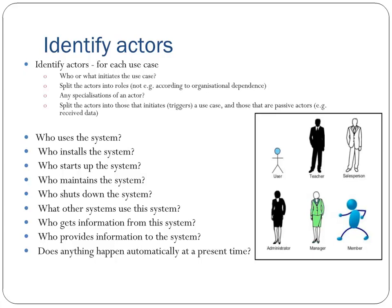What actor informs the system of those events? What actors will create, update, and manage activities? For Identifying Actors for each use case, consider: who or what initiates the use case? Split actors into roles — not according to organizational dependence. Any specializations of an actor — split actors into those that initiate or trigger a use case and those that are passive actors, for example receiving data. Who uses the system, who installs it, who starts it up, who maintains it, who shuts it down? What other systems use this system?